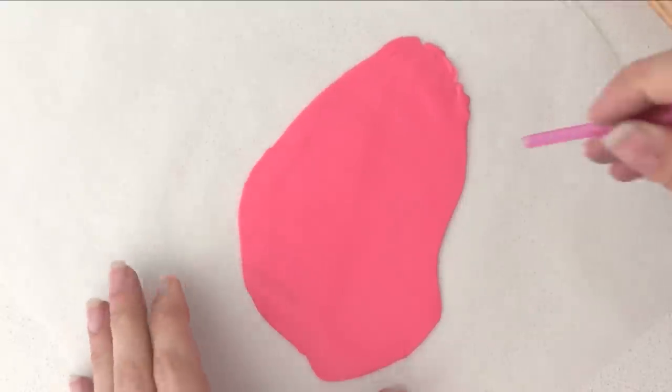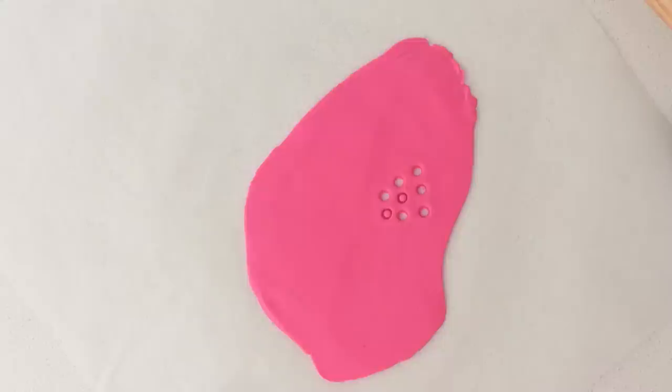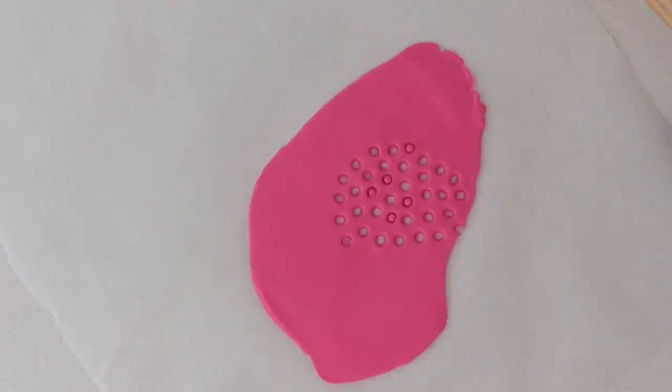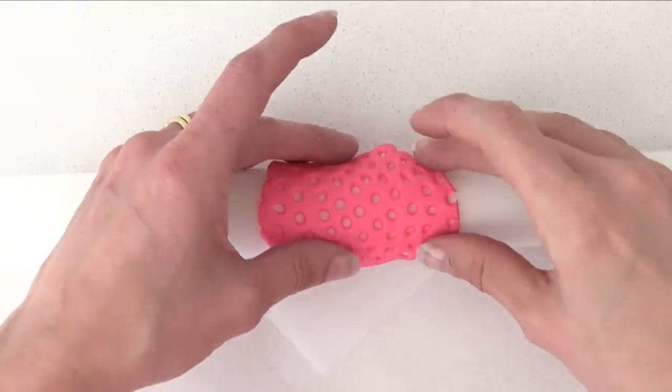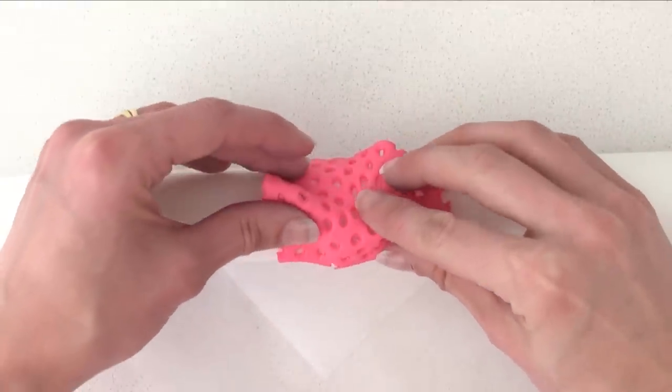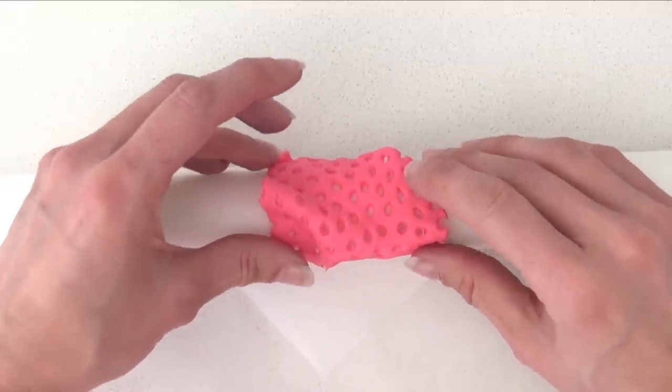For some coral, roll some pink or orange, whatever colors you want, and use a straw to cut out lots of little circles. Trim it and place it over a rolling pin covered in baking paper and shape it how you want. There's no right or wrong here, just make it a bit 3D and leave that to dry.